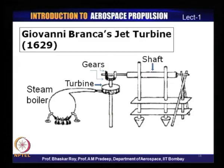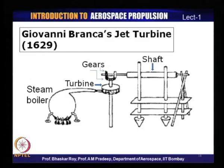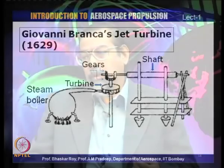Nearly 400 years back, a gentleman called Branca came up with the idea of a jet turbine. In those days, creating steam was a known thing. So if you boil a large beaker, create steam, and allow that steam to come through like a jet and impinge on a turbine held on a vertical shaft, it would create rotary motion. This rotary motion could be transferred through gears to a shaft, which could then be used to run a propeller — the entire device geared towards creating rotary motion that would finally run a propeller to make a craft fly through the air.